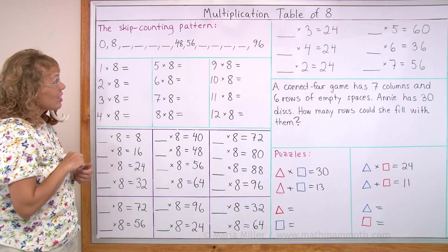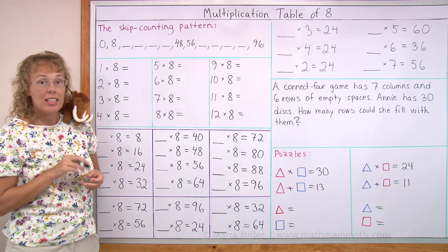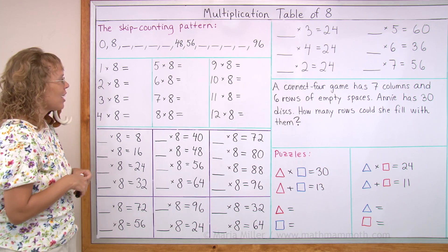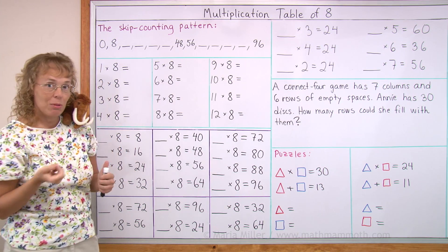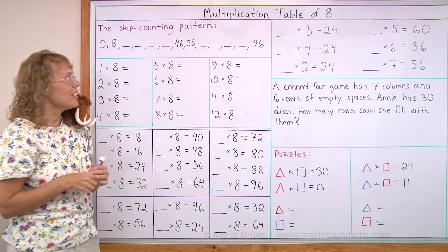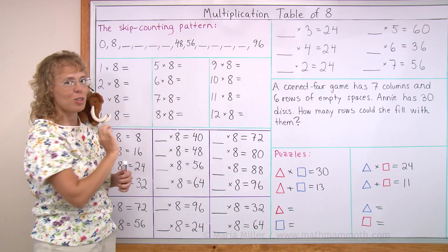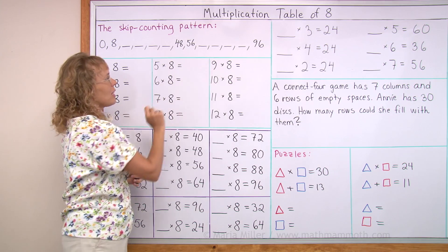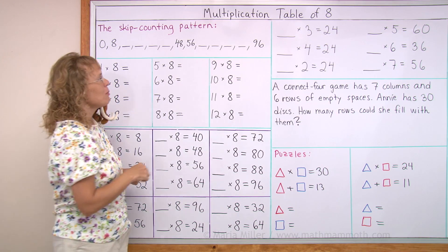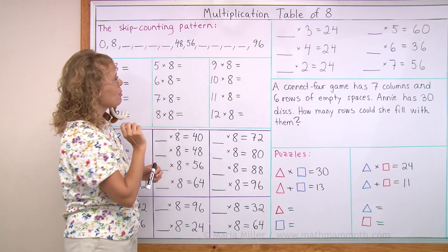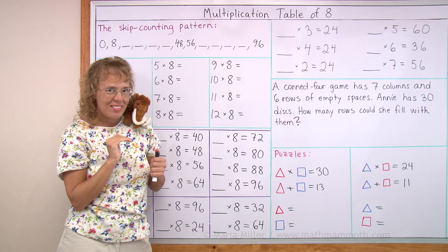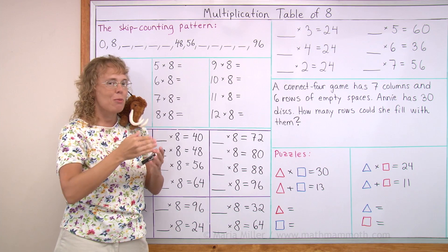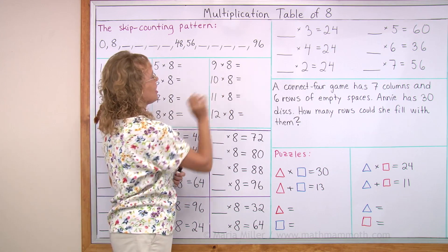Now we're going to study the multiplication table of 8. Like I mentioned, you already know most of these multiplication facts. For example, 6 times 8 was in the table of 6, which we have already studied — so that is 48. And 9 times 8: we have studied the table of 9. 9 times 8 is less than 80, it's in the 70s — 7 and 2 — it's 72.